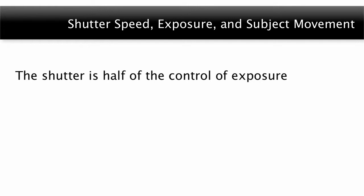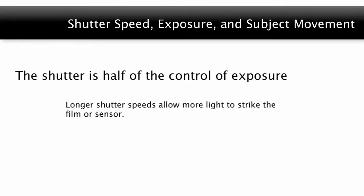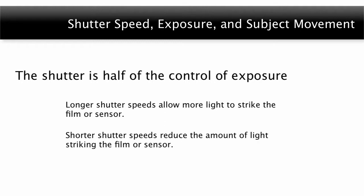As well as the shutter being used as a tool for composition, the shutter is also half of the control of exposure. The aperture is the second part of the equation needed for correct exposure. Longer shutter speeds allow more light to strike the film or sensor, while shorter shutter speeds reduce the amount of light striking the film or sensor.